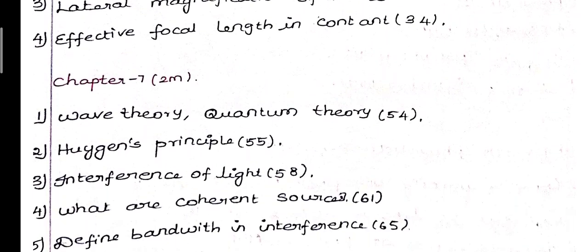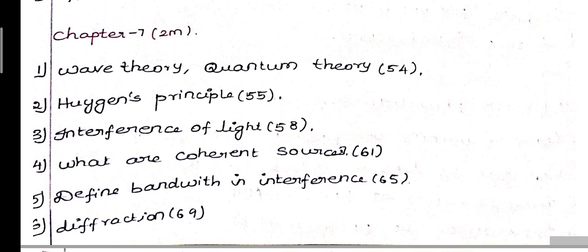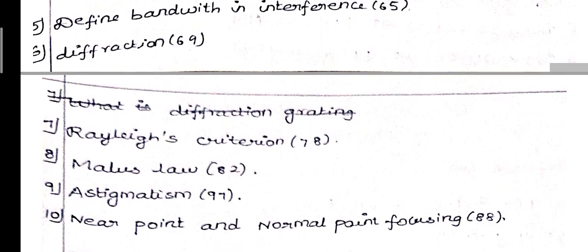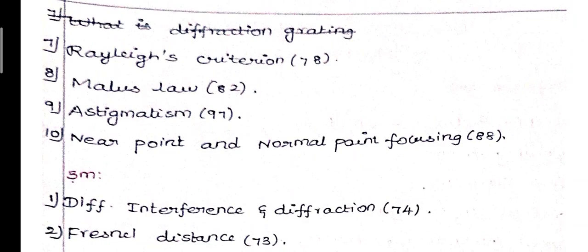Chapter 6 done. Next is Chapter 7: Wave Optics. 2-mark questions: 1st question - wave theory and quantum theory, page 54. 2nd question - Huygens' principle, page 55. 3rd question - diffraction of light, page number 58. 4th question - what are coherent sources, page 61. 5th question - define bandwidth in interference, page number 65. 6th question - what is diffraction, page 69. 7th question - what is Rayleigh criterion, page 78.